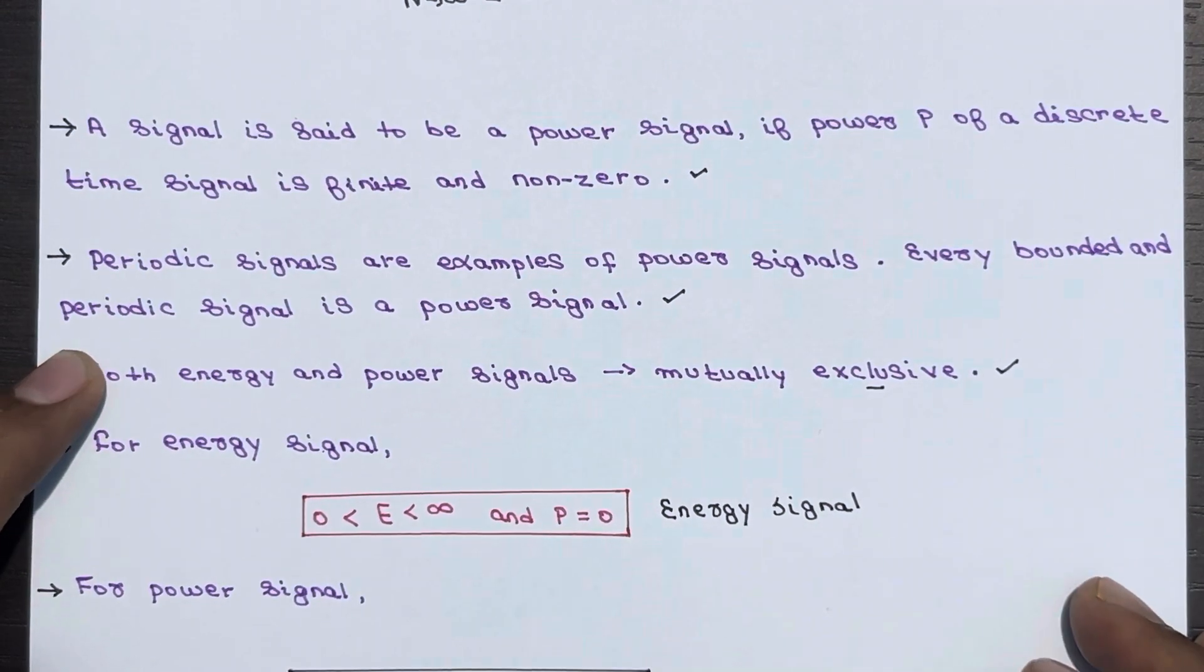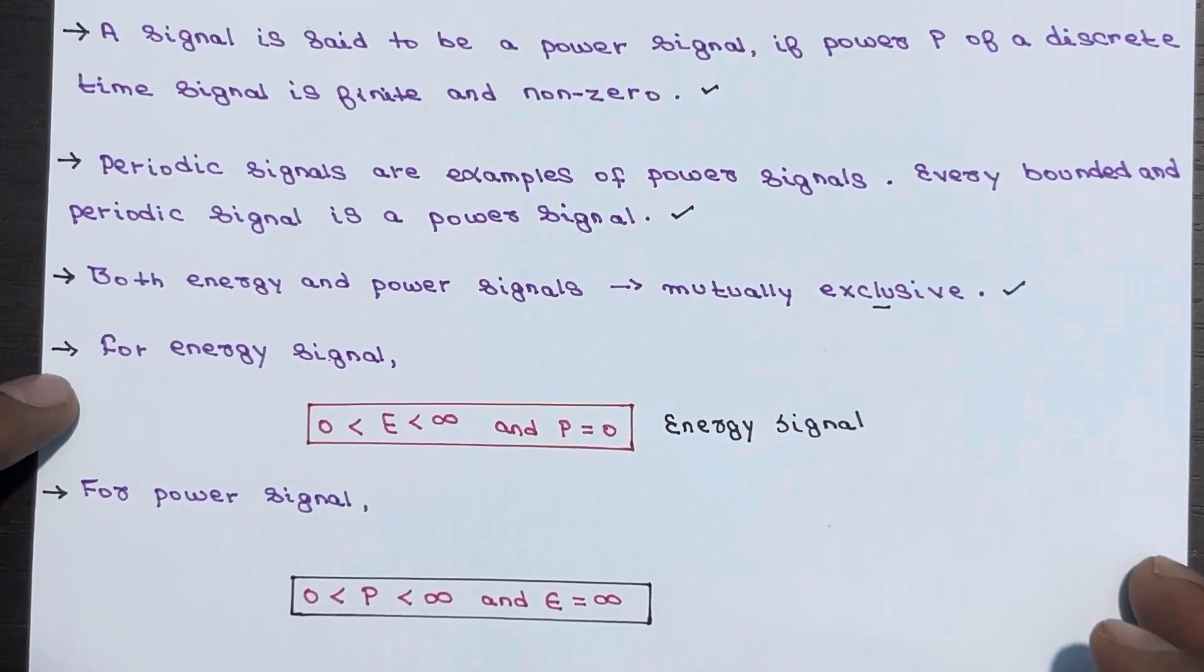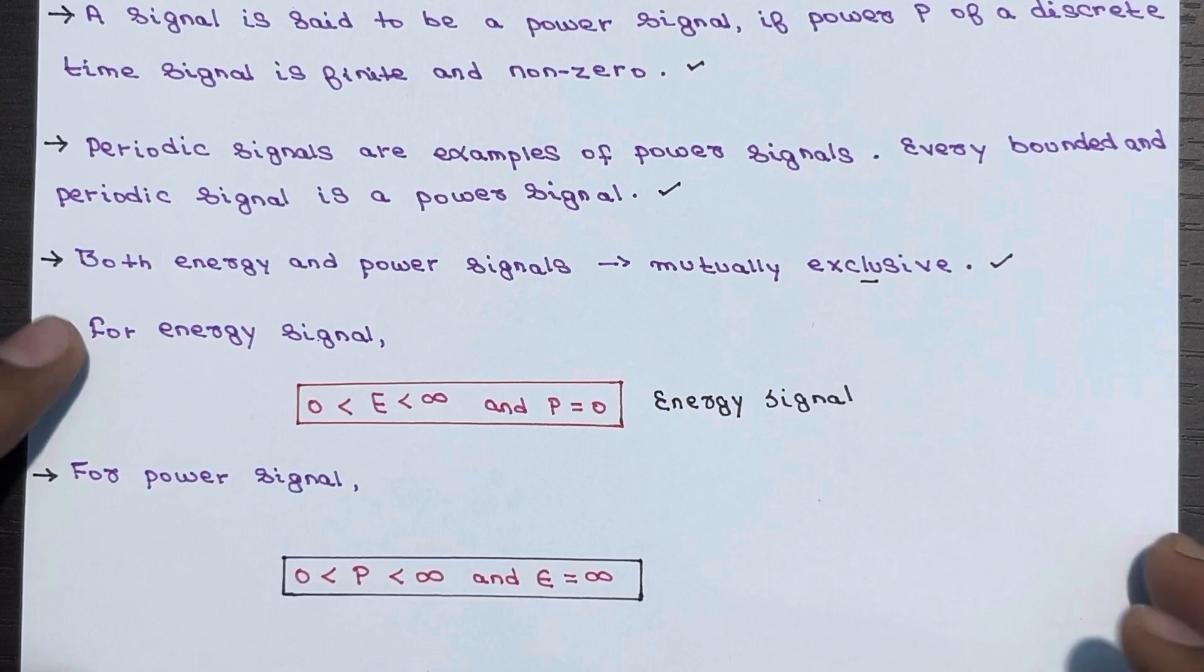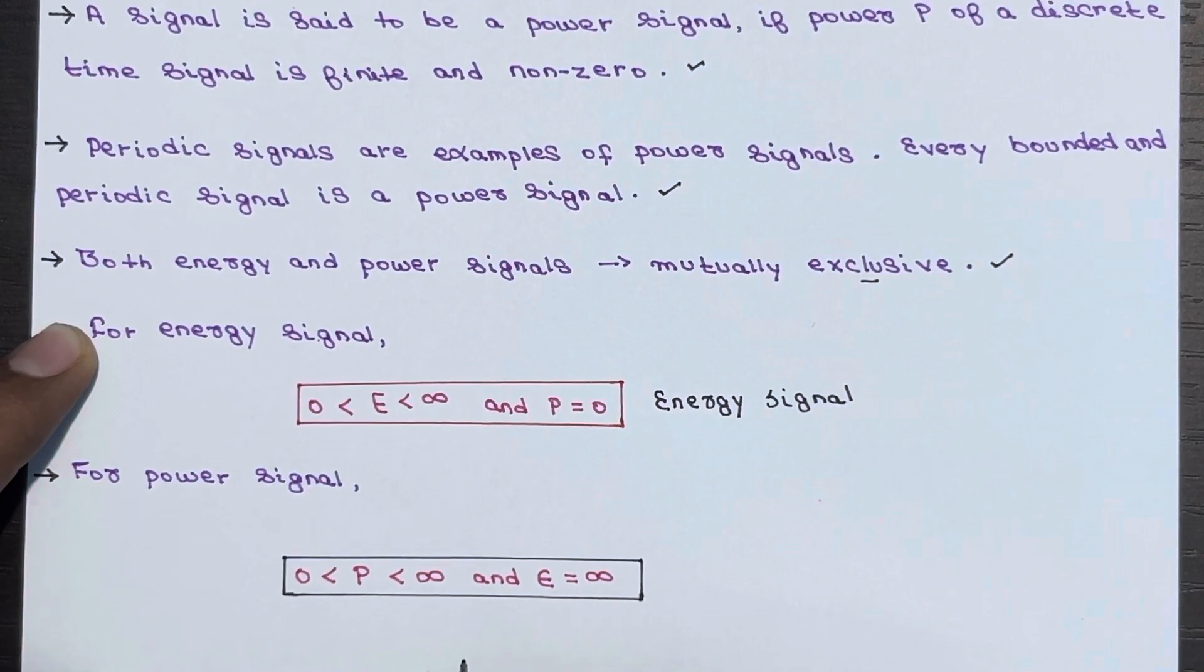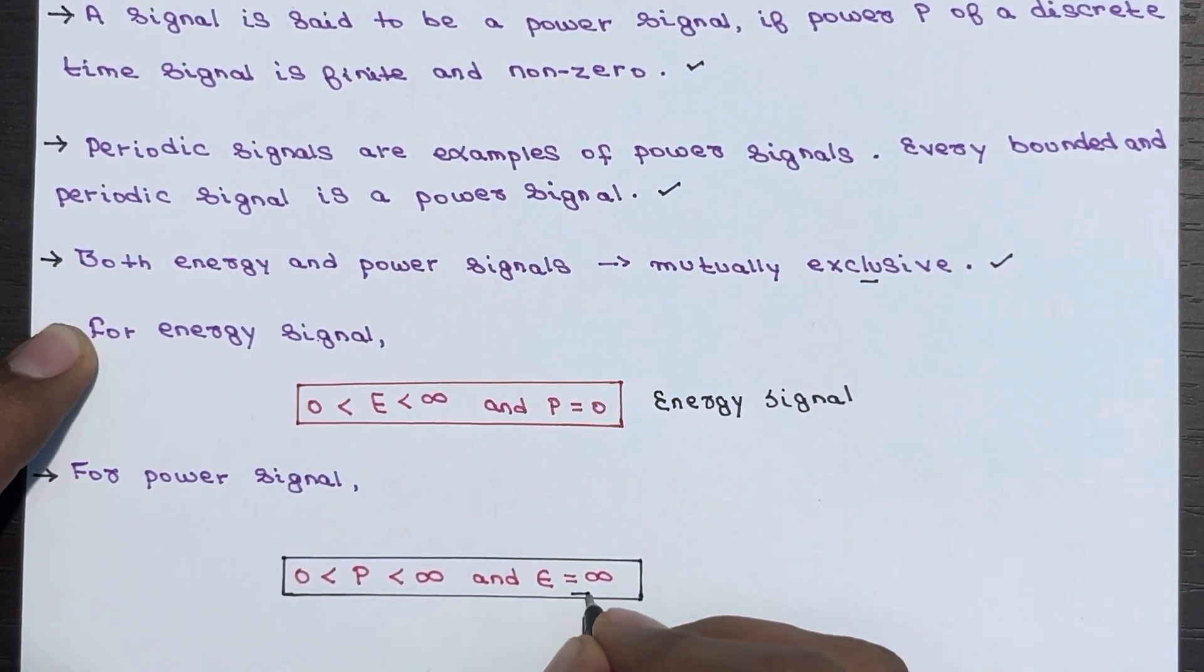For power signals, the average power is finite, so 0 < P < infinity, and energy will be infinite. This is a power signal.